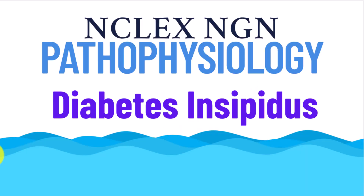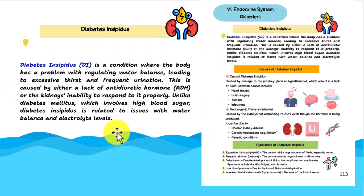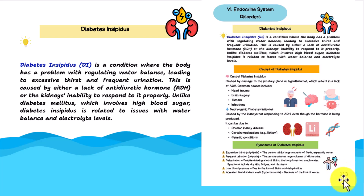Hi everyone, this is Nurse Anna from nursestudy.net. Since we just did the bow tie on the endocrine system, we're going to revisit diabetes insipidus to make sure we've got a good handle on it. I have my nursing study guide that I sell in my store — the link is down below. We're going to go to pages 113 to 114. The study guide has over 315 pages, and these are the two pages we'll concentrate on for today's lecture.